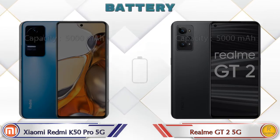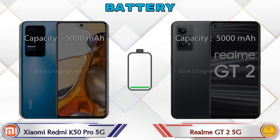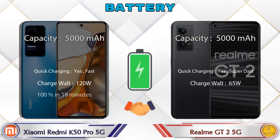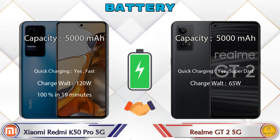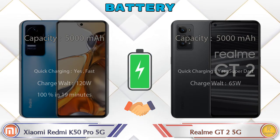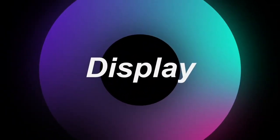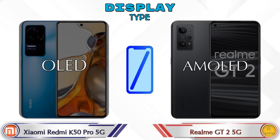Here are the complete details about the battery. Now let's see the information about the display. Talking about display type, the K50 Pro 5G has an OLED display and the GT2 5G has an E-AMOLED display.